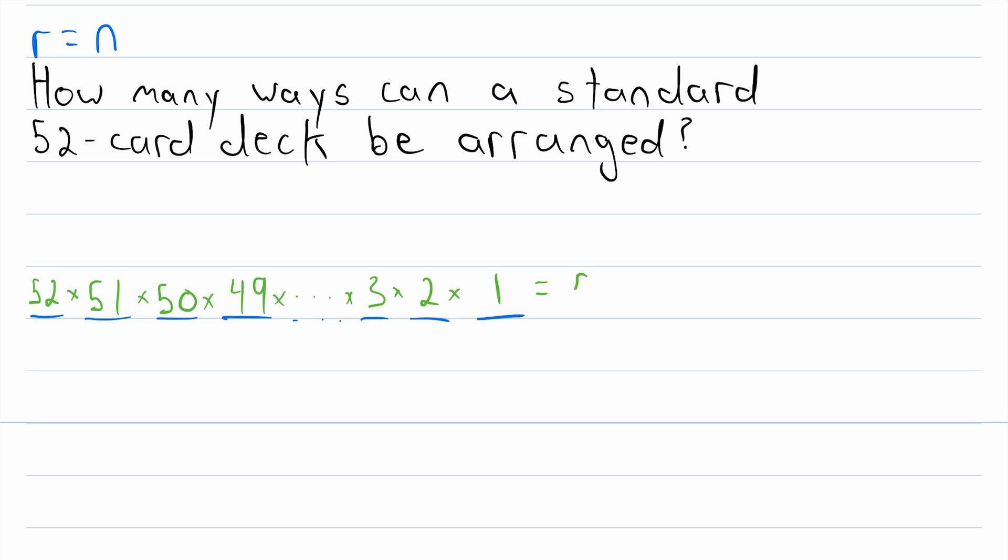And it can be written much more easily as what's called 52 factorial. That's what this exclamation point means. It means take this integer and multiply it by every integer less than it all the way down to one.